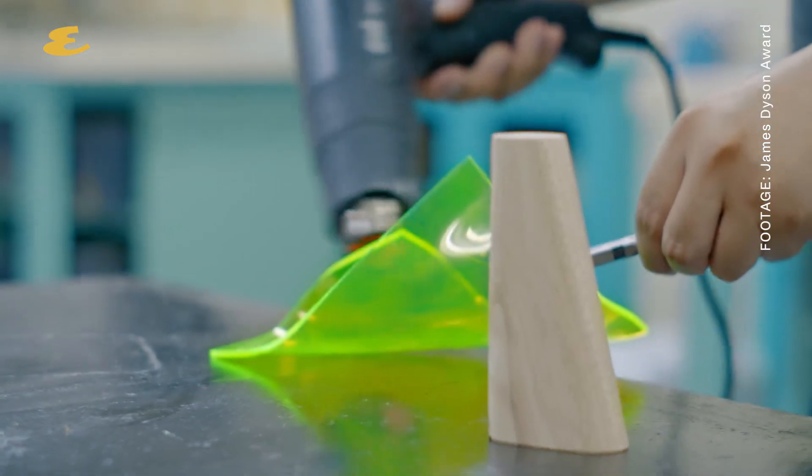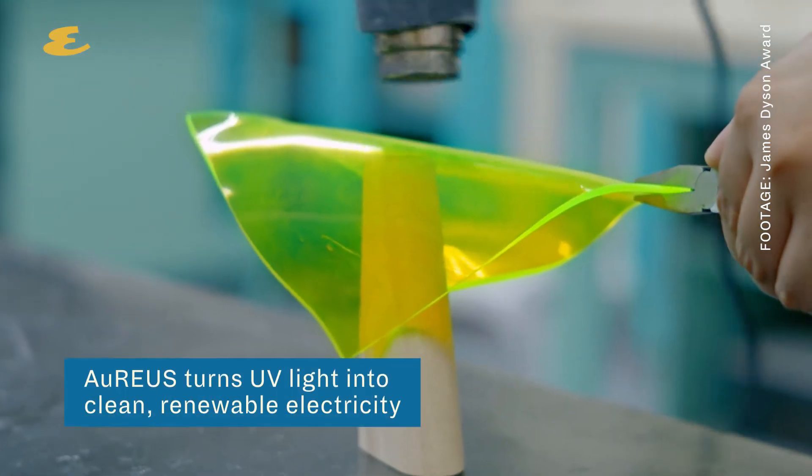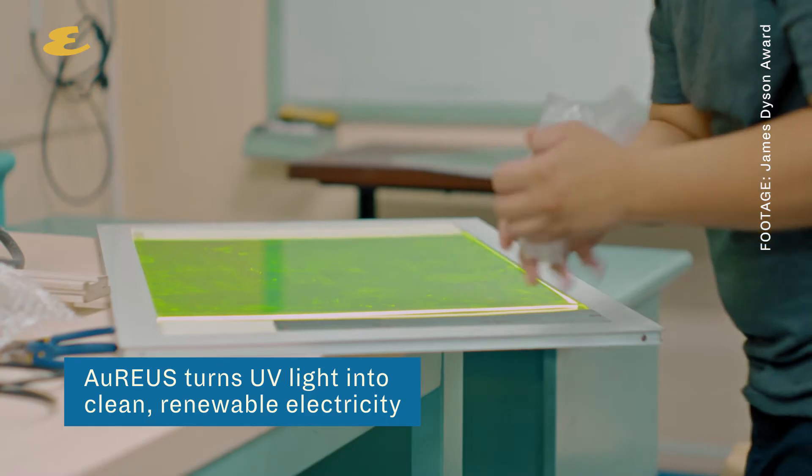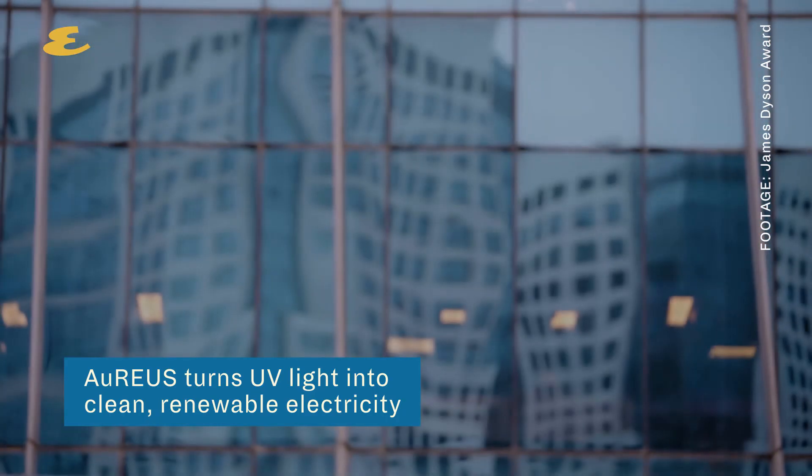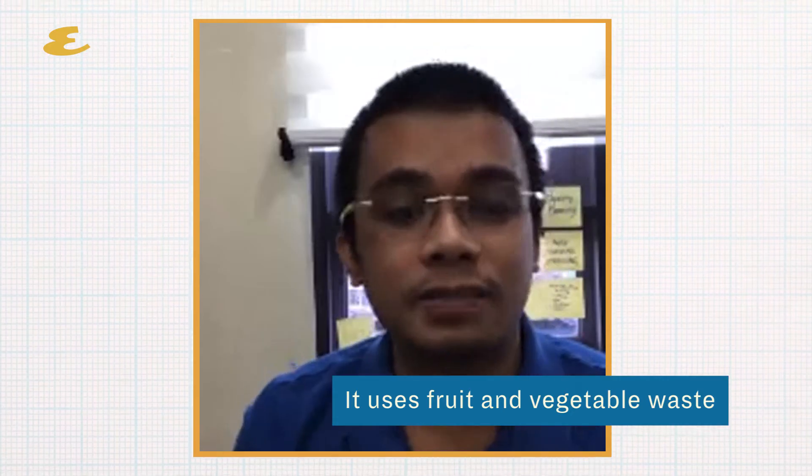Oreus is a technology that we can apply to different devices to allow them to absorb UV light and convert it into clean electricity. One of its key features is that the pigments we use for the material can actually be synthesized from waste fruits and vegetables.